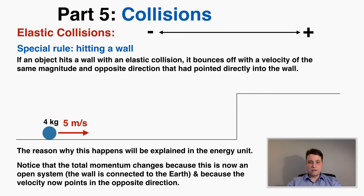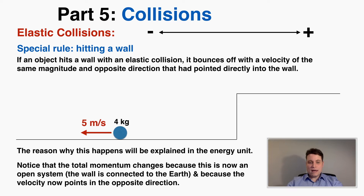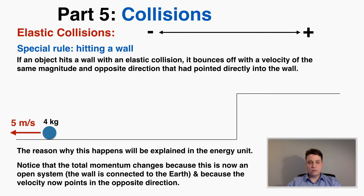There's a special rule for elastic collisions about hitting a wall. If an object hits a wall elastically, it bounces off with a velocity of the same magnitude but opposite direction, perpendicular to the wall. For example, a four kilogram object moving at five meters per second hits the wall and is reflected back at five meters per second in the opposite direction. The total momentum of the ball does change here because this is an open system — the wall is connected to the earth. The velocity pointing in the opposite direction means the change in momentum was negative 40 Newton seconds, going from positive 20 to negative 20.